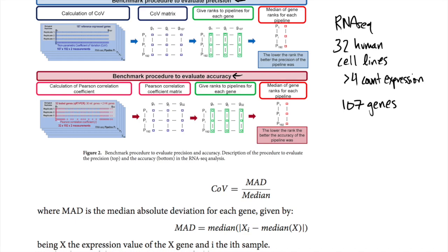And they were utilized within this sort of matrix in order to rank and calculate the coefficient of variation whose mathematical description is shown here. It's based on the median looking at the expression value for a certain gene within a sample. And so you calculate essentially the precision of a given pipeline utilizing the 107 reference genes.